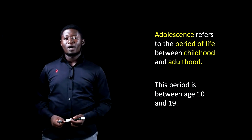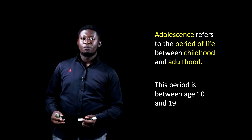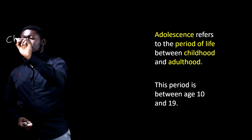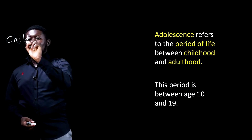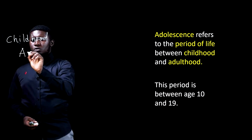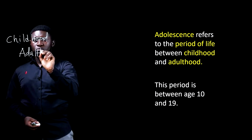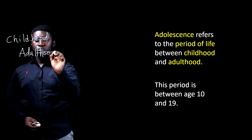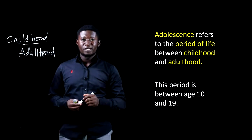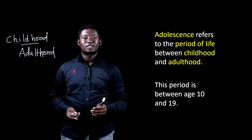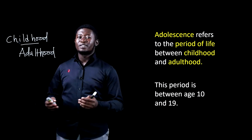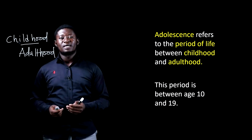When we talk about adolescence, it is a period between childhood and adulthood. The adolescent is somewhere in between these two main periods of life. The age limit for adolescence is between age 10 and age 19.